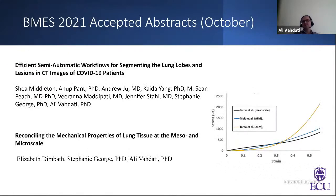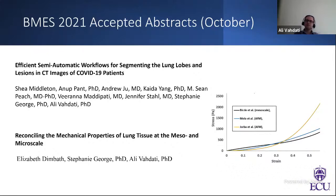These are the two abstracts accepted for presentation at the BMES 2021 Annual Meeting. The second abstract is focused on better understanding the mechanical behavior of lung tissue at the micro and meso scale, so we can use appropriate constitutive models and mechanical properties in our computer models. In this second abstract we developed a meso-scale lung tissue finite element model and studied the emergent mechanical properties of the tissue based on available atomic force microscopy measurements.